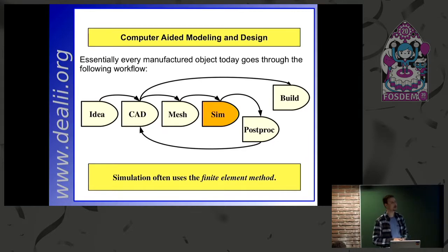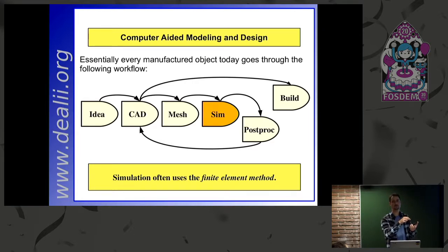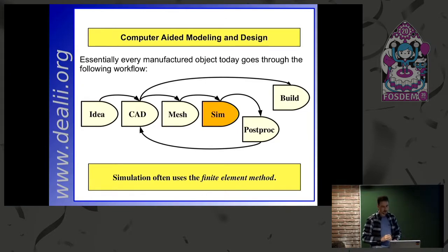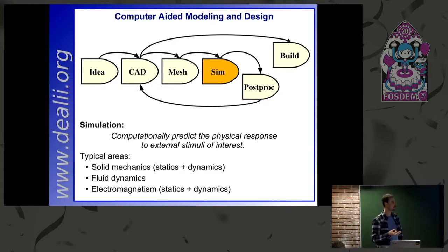In the simulator realm, for a lot of problems the method of choice is called the finite element method — there are others like finite differences and finite volumes. Finite elements fundamentally says: you have your object, you want to see how it deforms under a force, you break it into very small virtual chunks, and write down equations saying each chunk deforms in a particular way in response to the deformations of neighboring chunks. The three classical areas for simulation are mechanics — static deformation or solid dynamics.